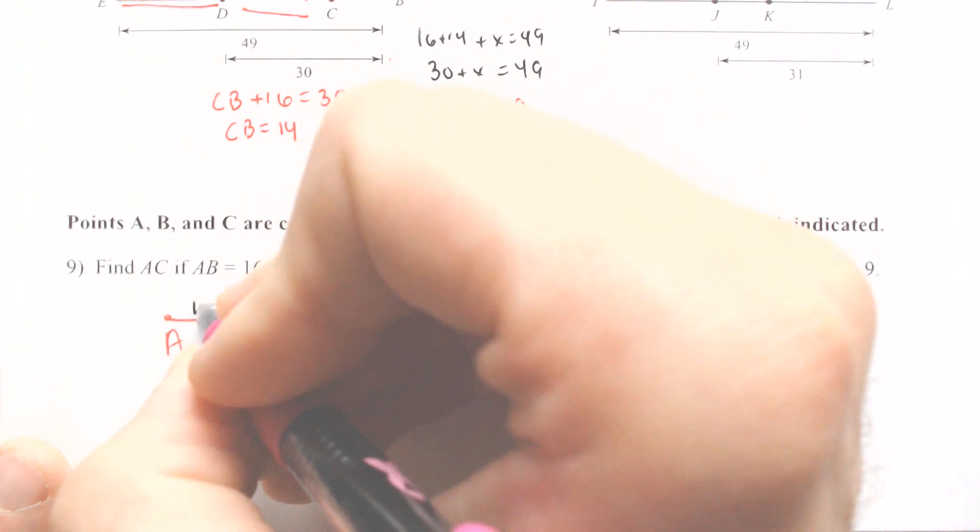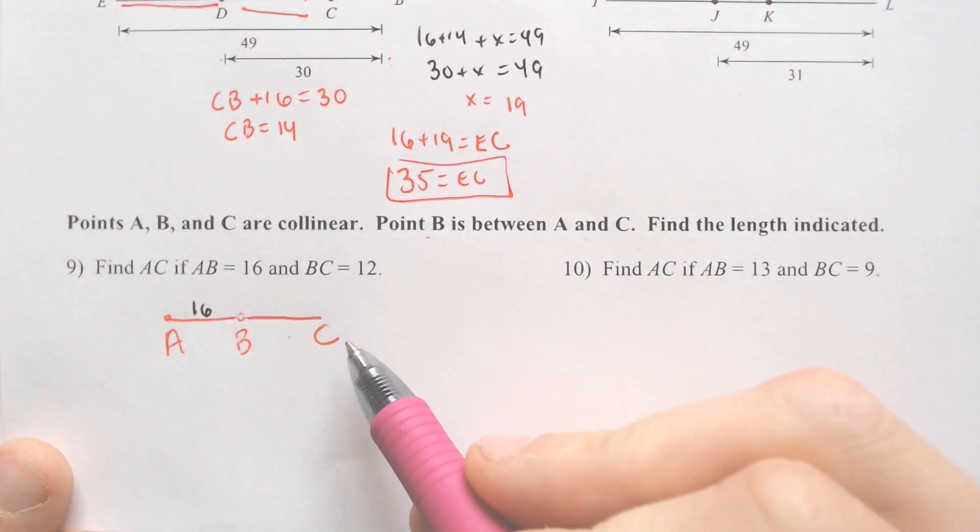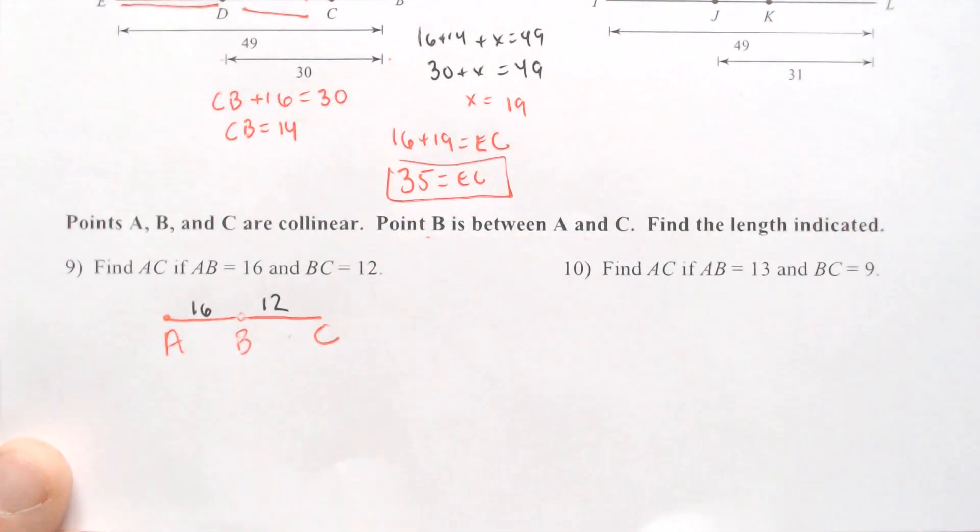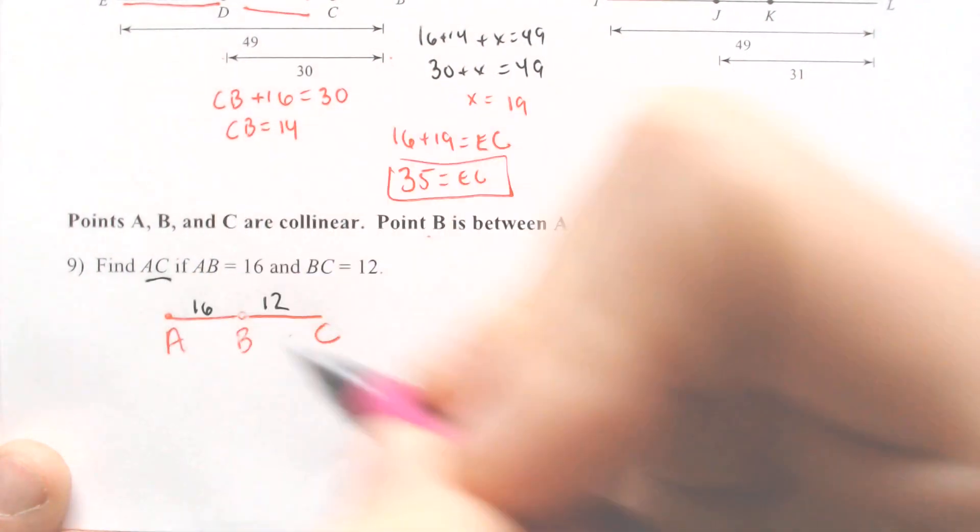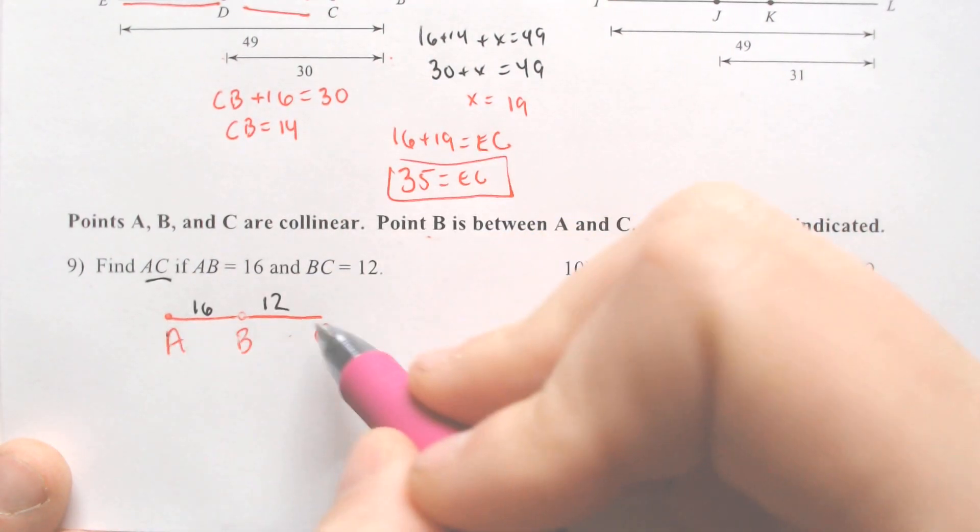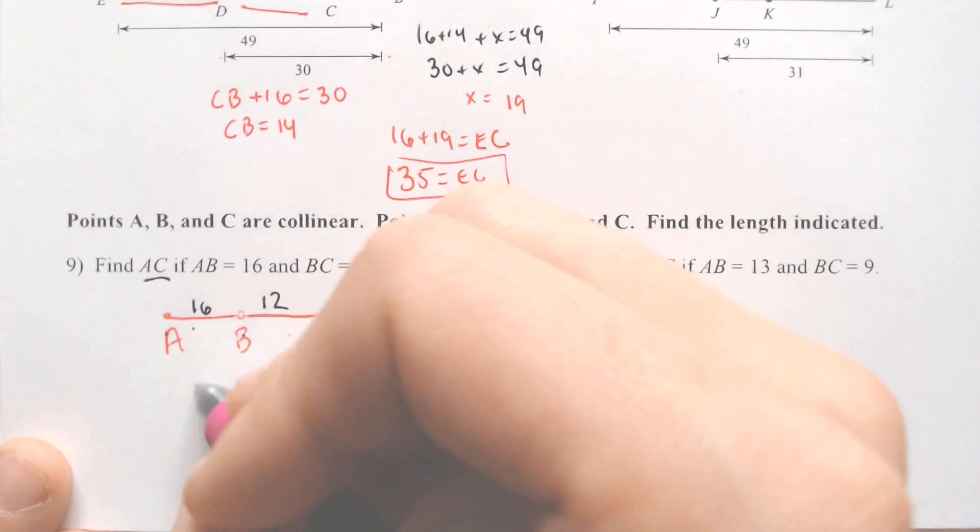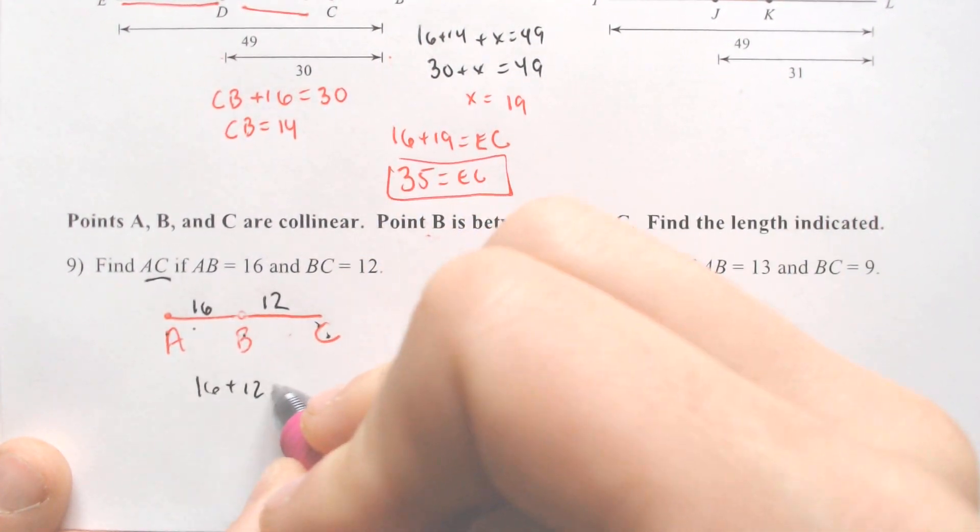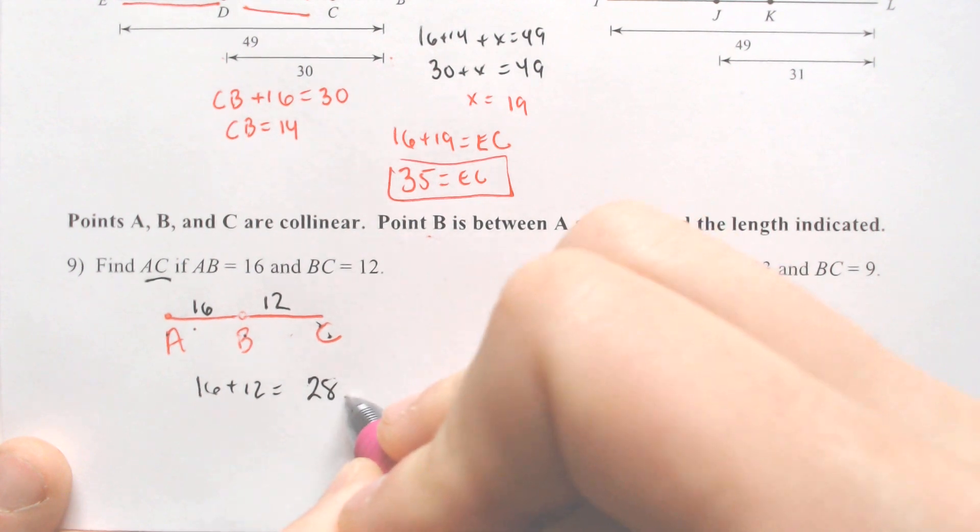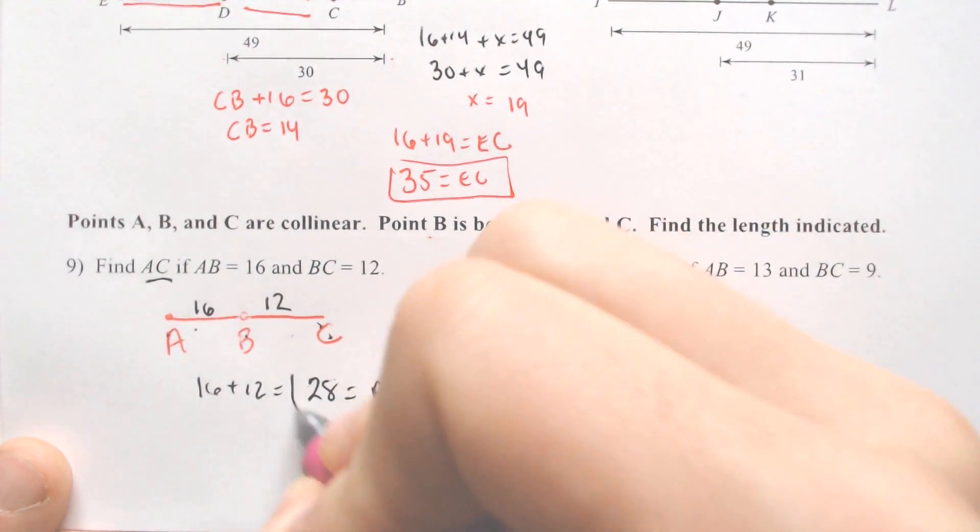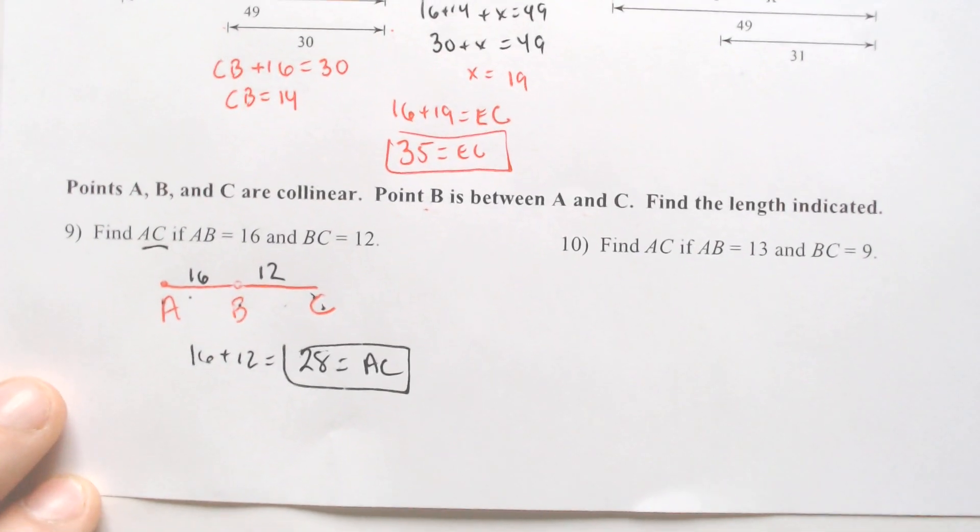Fill in what they give you. A to B is 16, so this is 16. B to C is 12. What are we finding? A to C. Well, this isn't that hard. A to C is the whole way across. You have to add the two smaller parts to get the whole way across, which is 16 plus 12. 28 would equal A to C.